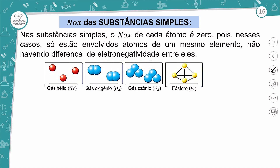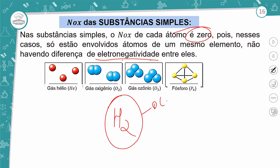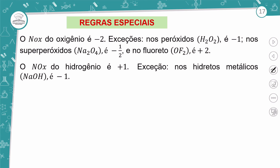Para substâncias simples, o NOX é sempre igual a zero, pois envolvem átomos de um mesmo elemento sem diferença de eletronegatividade. Por exemplo: H₂, o NOX é zero; P₄, o NOX também é zero.